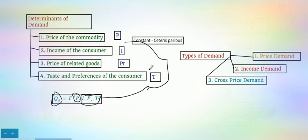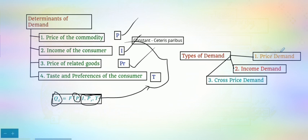The law of demand only deals with the price of the commodity. By keeping all other determinants constant, if the price changes, how demand is affected is explained by the law of demand. Based on these determinants, demand is classified into three types: price demand, income demand, and cross price demand. Price demand tells the relationship between price and quantity demanded; income demand tells the relationship between income and quantity demanded; and cross price demand explains how the price of related goods affects the demand for our commodity.